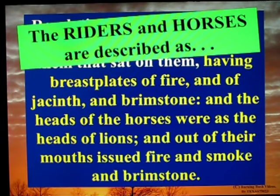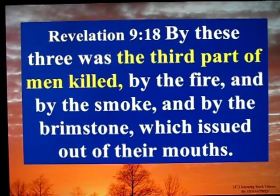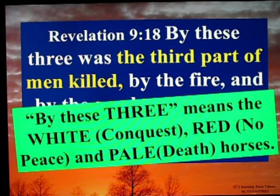The riders and horses are described as having breastplates of fire and of jacinth and brimstone. And the heads of the horses were as the heads of lions, and out of their mouths issued fire and smoke and brimstone. Revelation 9:18: 'By these three were the third part of men killed by the fire and by the smoke and by the brimstone which issued out of their mouths.' By these three means the white — conquest — red — no peace — and pale — death. Those three horses.